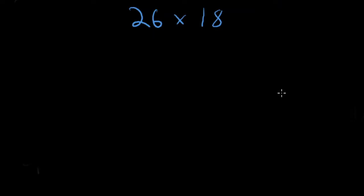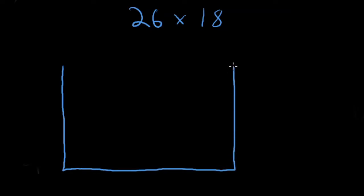All right, let's get started. We've got 26 times 18 for the area model. First thing you need to do is draw a figure that looks like this — I've heard students call it a window, a square, or a rectangle. Whatever you want to call it, just draw a figure like this. Next step: let's break apart our multiplication problem, just like you did in earlier grades.